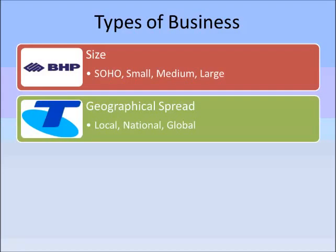Businesses that also operate overseas — examples would include Telstra or Broken Hill Prospecting, known as BHP — have operations all around the world. Well known foreign companies that are global businesses include companies like Nike, Apple, or Microsoft.